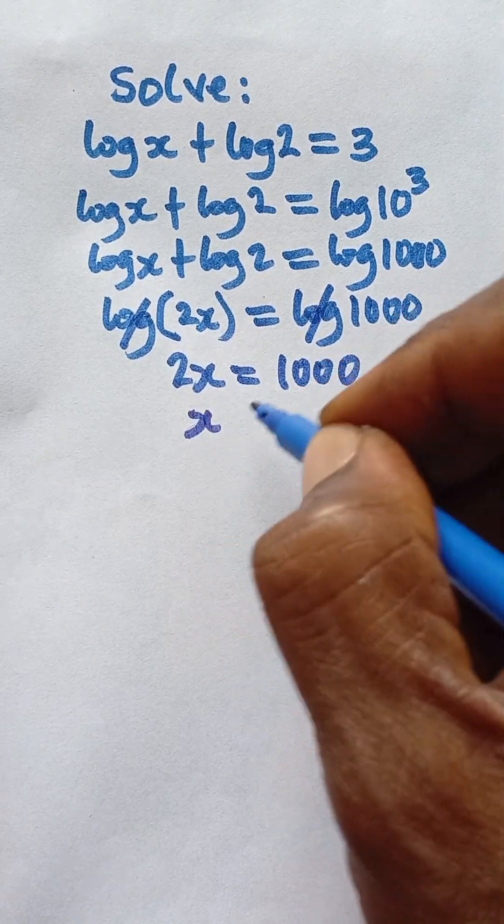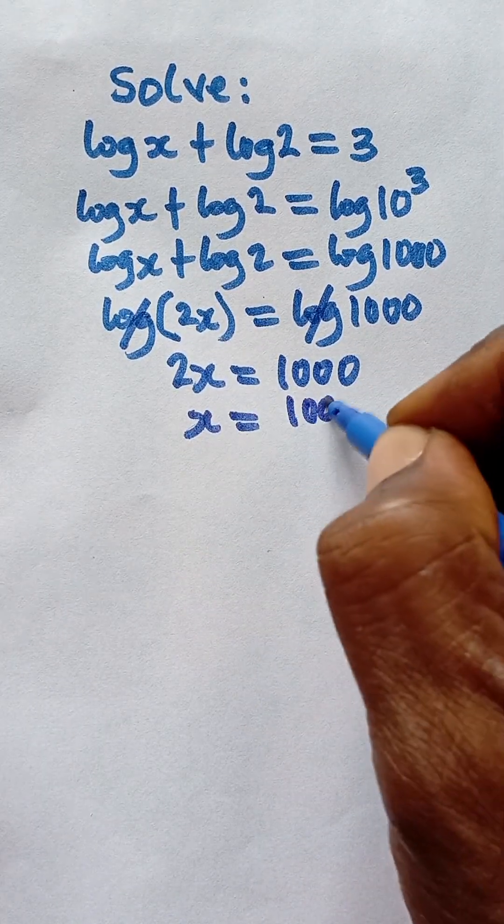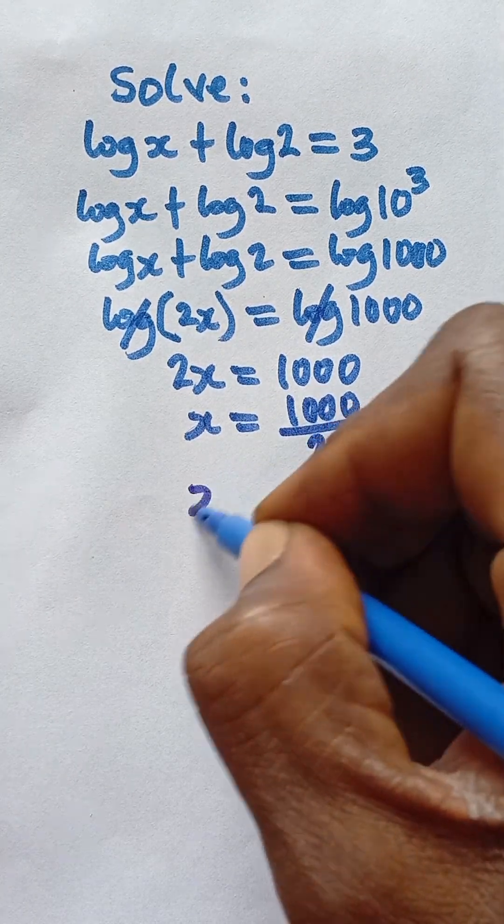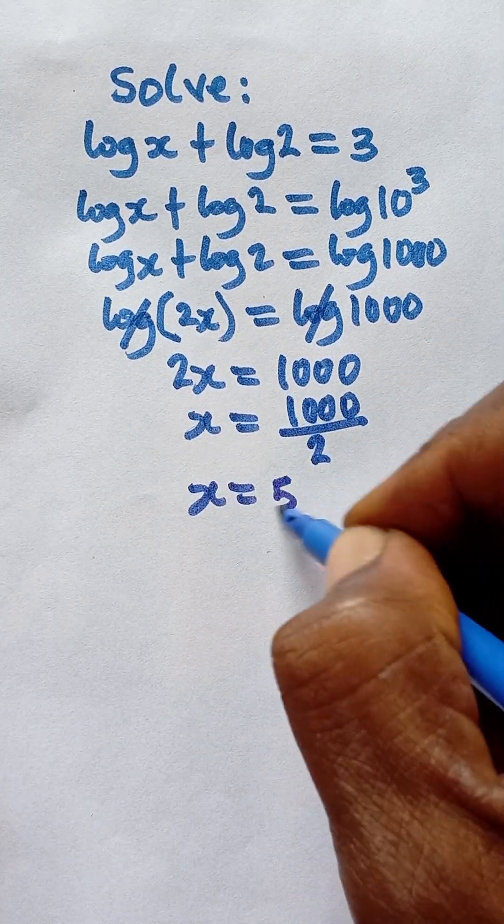So in order to get x, we divide both sides by 2, and that will give us x is equal to 500.